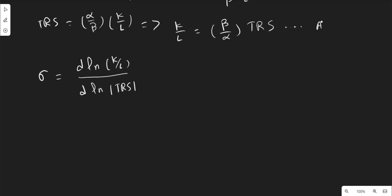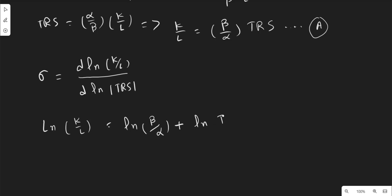If we take the log of equation A, we get: log(K/L) = log(β/α) + log|MRTS|. Here log(β/α) is a constant, and we applied the log rule: log(m · n) = log(m) + log(n).